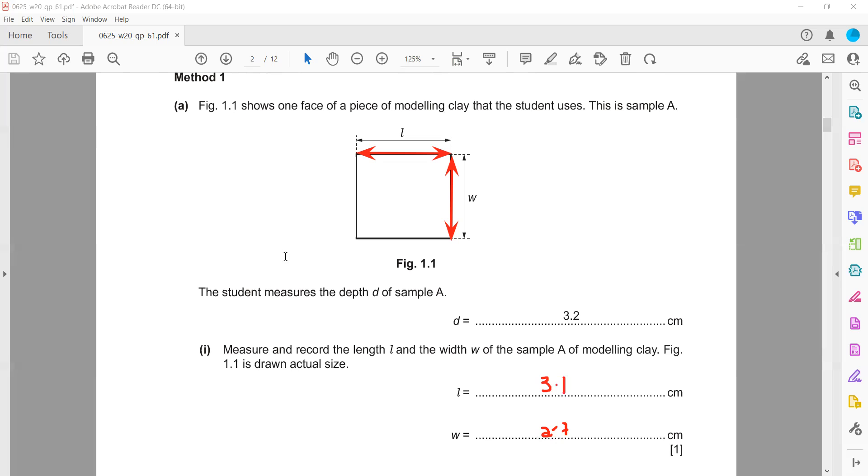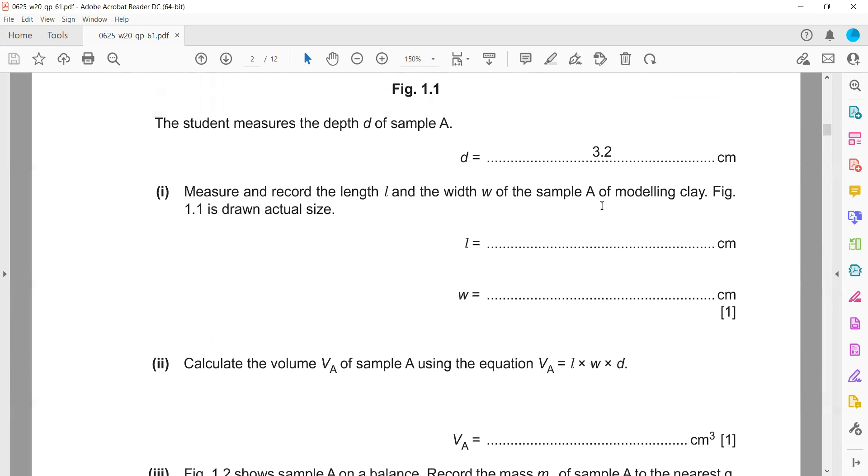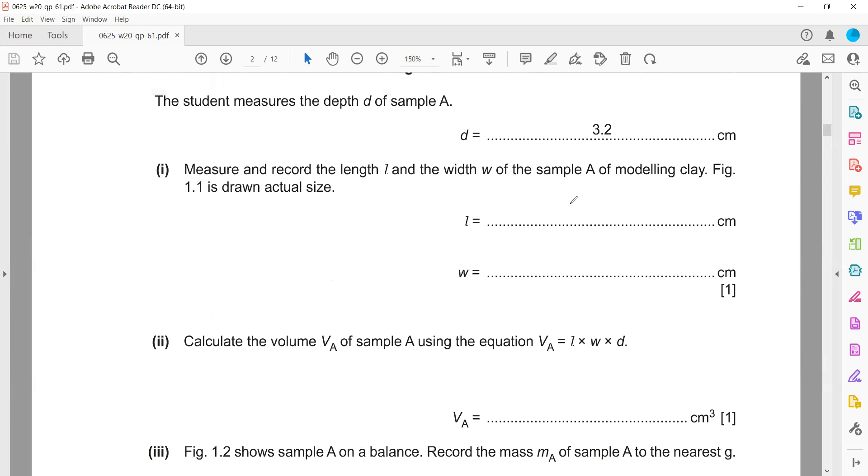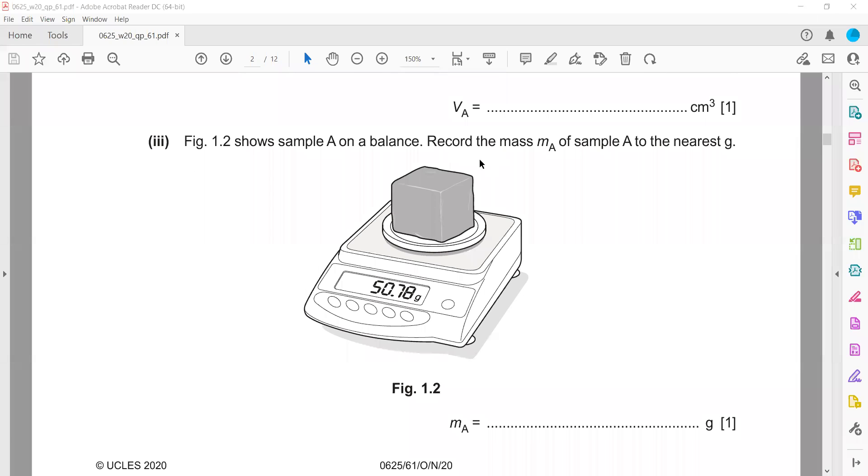You will measure in the exam from the hard copy. For the volume in Paper 6, you don't have to memorize any formula; they will provide it. So if length was 3.1 and width was 2.7, you multiply all of them with the depth to get the volume.